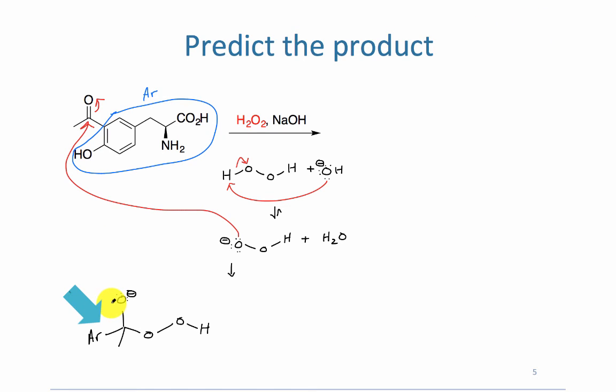The lone pair of electrons from the oxygen pushes down. That pushes the aryl over to the oxygen, and that oxygen-oxygen bond breaks.